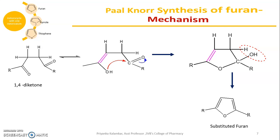Students, you have two synthetic methods in your syllabus. The first is synthesis of furan using carbohydrates, where pentoses are converted into furfural by dehydration with loss of three water molecules, and furfural is further converted into furan. The second is Paal-Knorr synthesis, where 1,4-diketones are converted into substituted furan via intramolecular attack, cyclization, and dehydration. With this we have completed the first two synthetic methods for furan. Hope you have understood it.